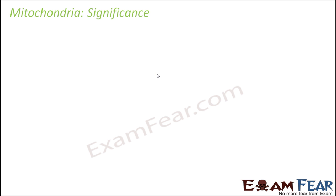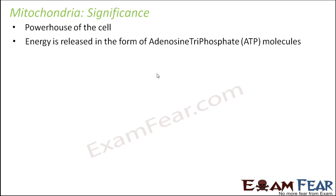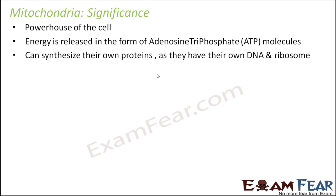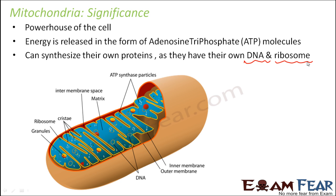To sum up, mitochondria are the powerhouse of the cell. They are the site where glucose is oxidized to produce carbon dioxide, water, and energy in the form of ATP — adenosine triphosphate — molecules. Since mitochondria have their own DNA and ribosomes, they can synthesize their own proteins, unlike some organelles that depend on cytoplasmic ribosomes. The DNA and ribosomes together help in protein synthesis within the mitochondria.